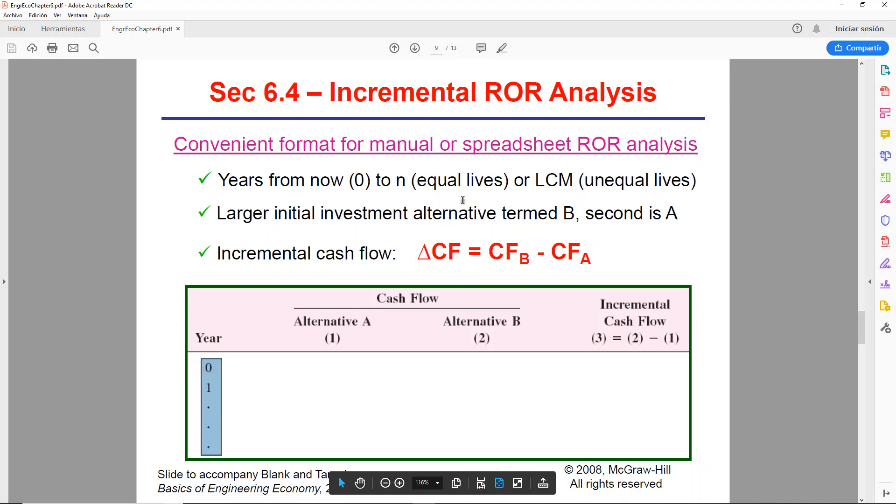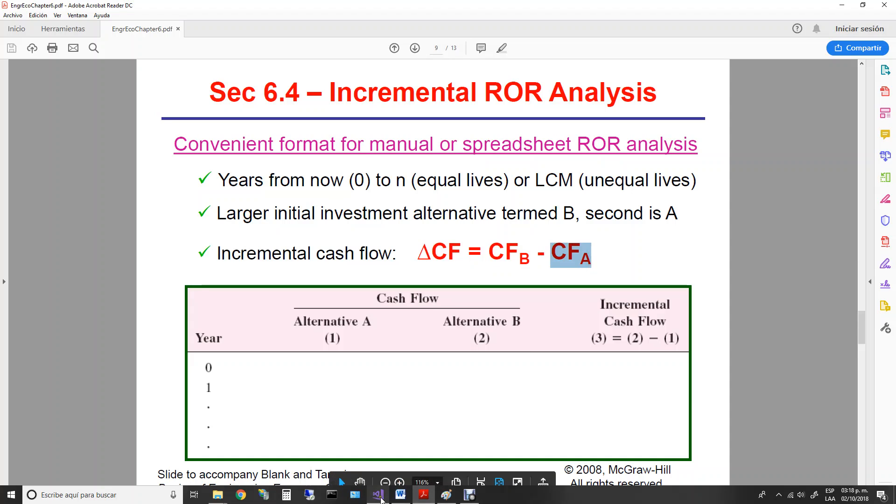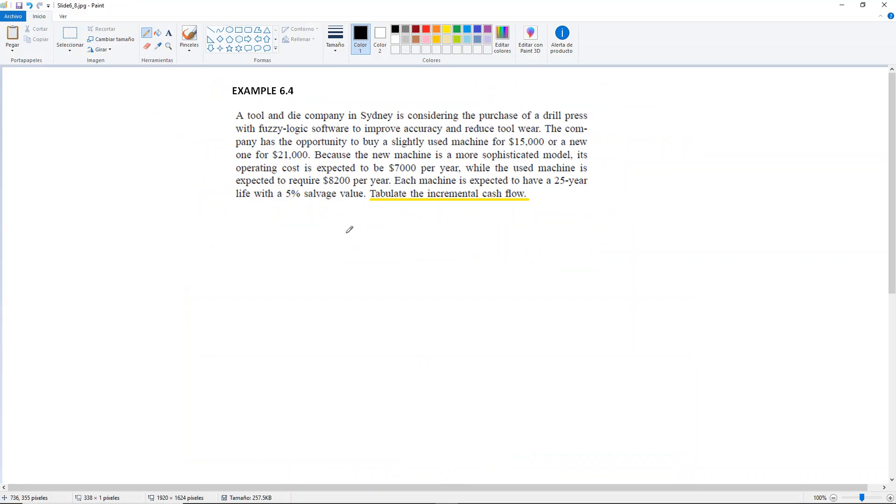You're going to set alternative B as the one with the larger initial investment, so you're going to be looking at your P. Alternative B will have a higher P than alternative A, and then you're going to find the difference between the two, hence the delta cash flow. The cash flows from B minus the cash flows from A.